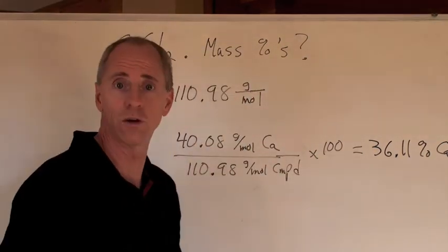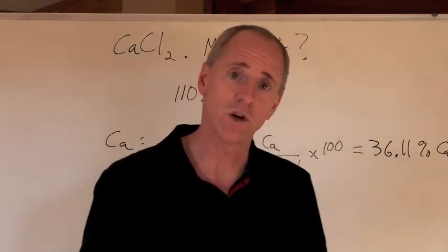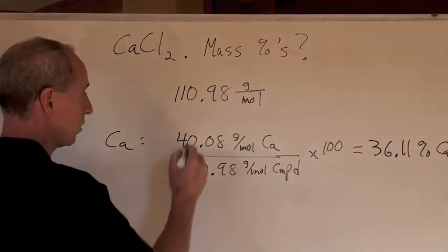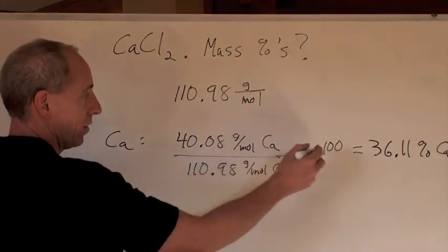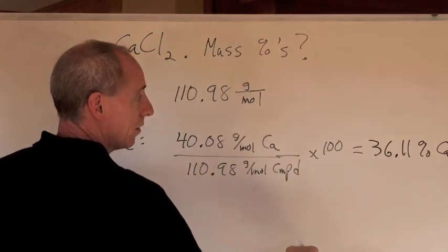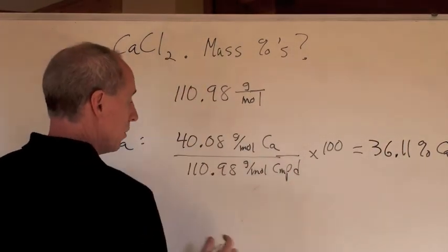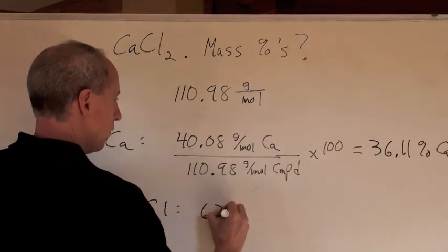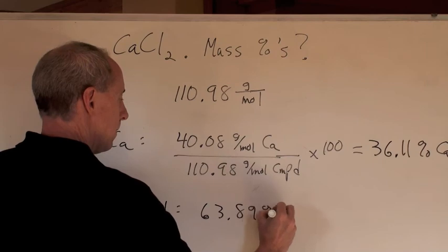Now, what is going to be the mass of the chlorine? When you're given two atoms and the total has to be 100, you can either do the calculation here for chlorine, which is going to be 70.90 divided by this number times 100, or just take this and subtract it from 100%, since there's only two elements here, and the chlorine is going to be 63.89 percent.